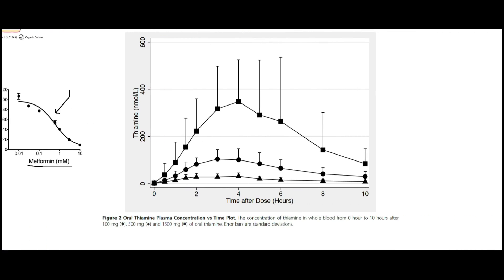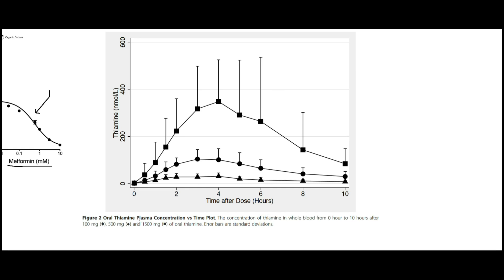This graph shows oral thiamine plasma concentration versus time after eating — specifically the concentration of thiamine in whole blood from 0 to 10 hours after taking 100 mg, 500 mg, or 1500 mg of oral thiamine. Blood concentrations of thiamine peak somewhere between two and four hours after taking these supplements.